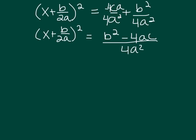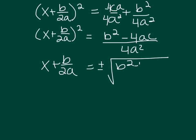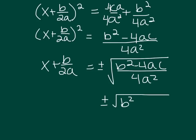I'm trying to solve for x, so now it's time to take the square root of both sides. We've got x + b/2a equals plus or minus the square root of (b² minus 4ac) over 4a². That's plus or minus the square root of b² minus 4ac on top, divided by the square root of 4, which is 2, and the square root of a² is a.